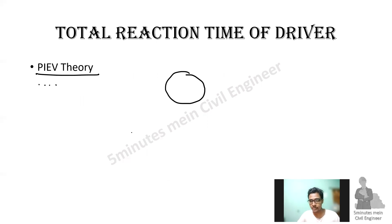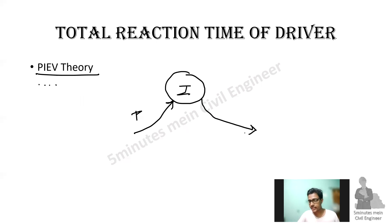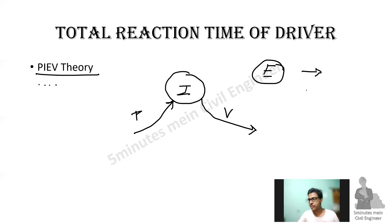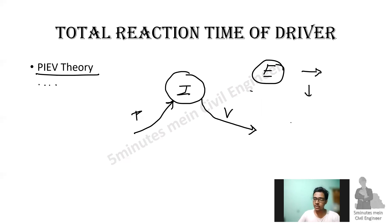In Perception, the driver's brain receives the stimulus. Intellection involves processing the information in the brain, and Volition is the decision to act. Emotion — such as anger, fear, or other mental states — can slow down the driver's brain response. Together, PIEV gives the total reaction time of the driver. According to IRC, this value is 2.5 seconds, though it can be taken as 2 seconds in some cases.